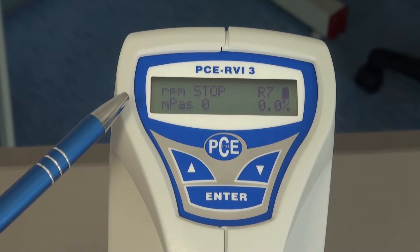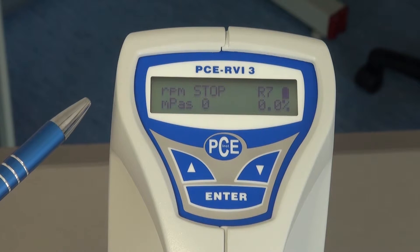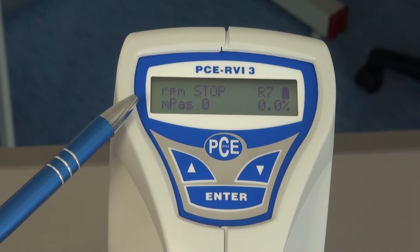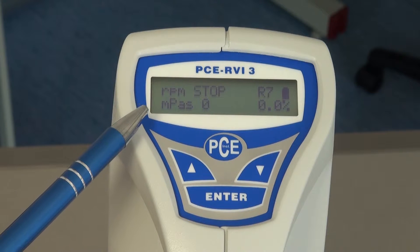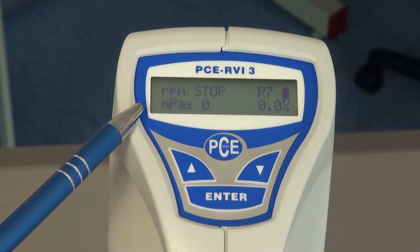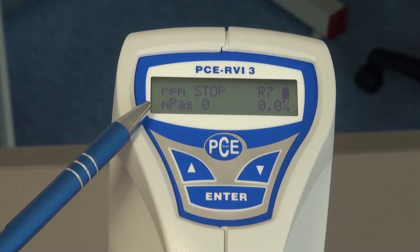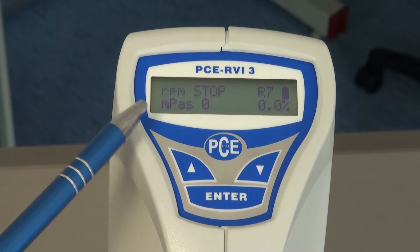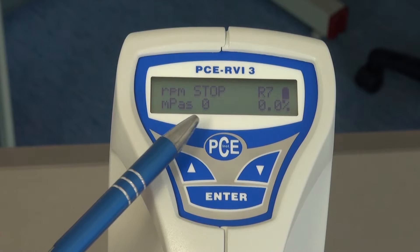The PC RVI3 is available in two models. One in the model 20 revolutions per minute and one with 60 revolutions per minute. Underneath the revolutions per minute I can see the measured viscosity. Here it is at 0 because the measuring device is not working at the moment.